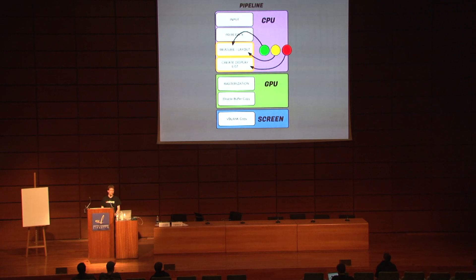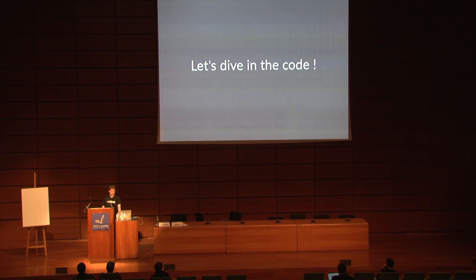Let's dive a little bit into the code to understand why we have these issues with view groups. There are two main methods in ViewGroup: onMeasure and onLayout. onMeasure is basically here in order to make the view group measure itself first, and secondly each of its children. onLayout is where you just have to tell each of the children exactly where they are going to go.